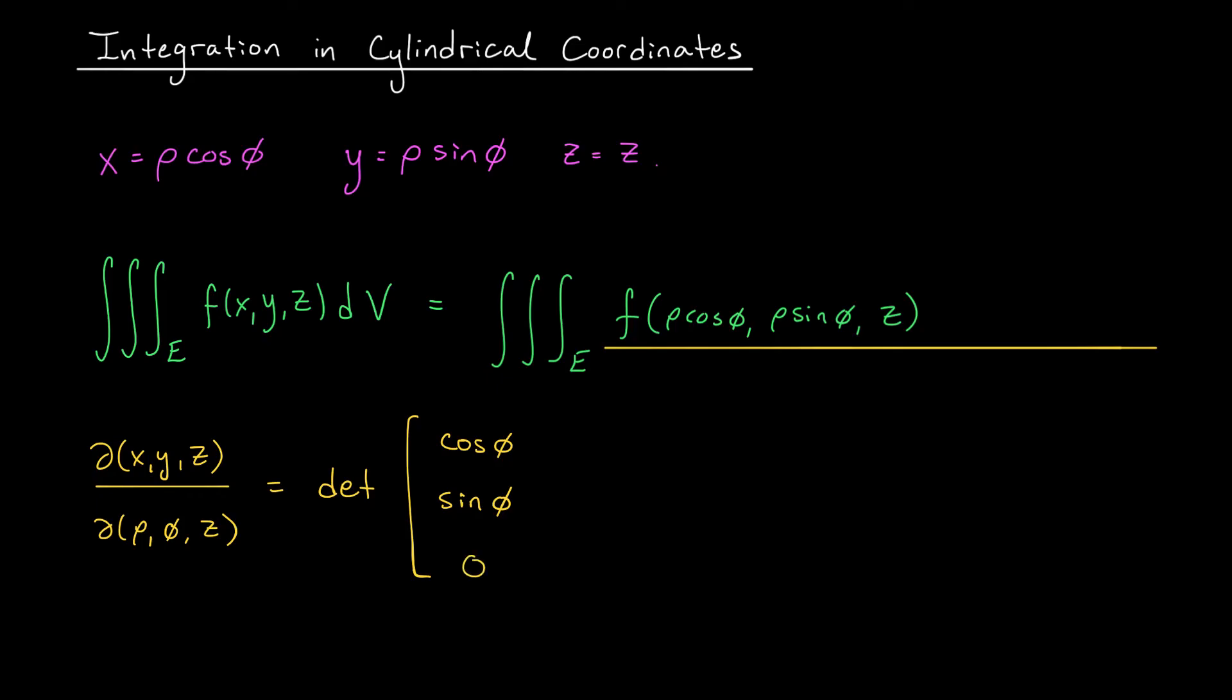In the second column, we take derivatives with respect to phi. I get -rho sin phi, rho cos phi, and again, my final entry is zero. Finally, I take derivatives with respect to z. There are no z's here, right? So my first two entries are zero, and the final entry is one.